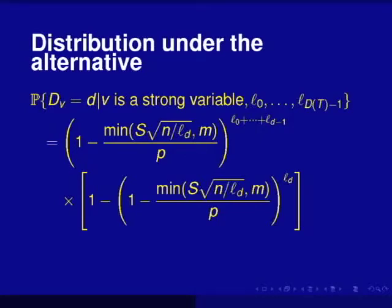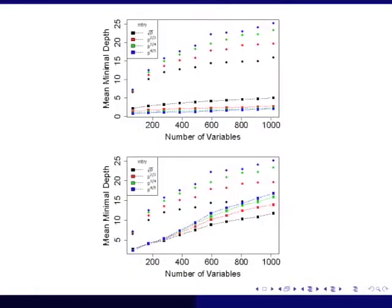Next we look at mTRI. What I've written here is the distribution under the alternative — suppose the variable is strong and actually related to the outcome. You can write out the distribution, but now it involves an interplay between the signal strength of the strong variable, the depth, and mTRI. Here is the same data set with number of noise variables going from 200 to 1,000 under different mTRI values. The separation is actually increasing as mTRI increases — as you increase mTRI, the mean minimal depth increases under the null but decreases under the alternative, giving you perfect separation.